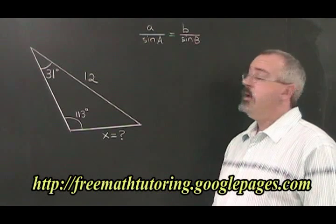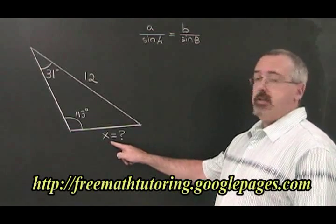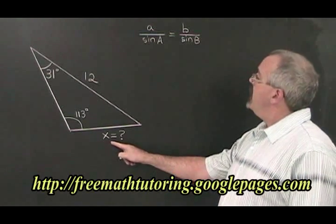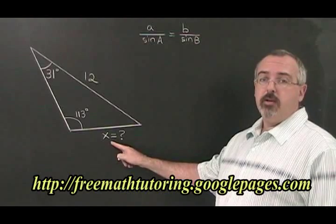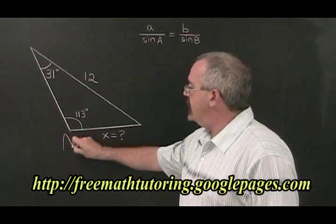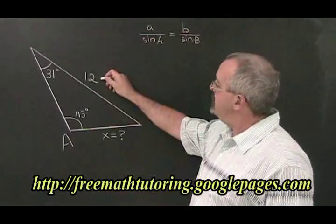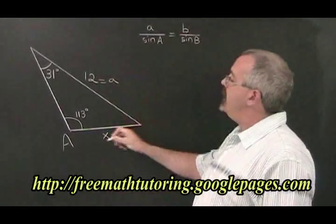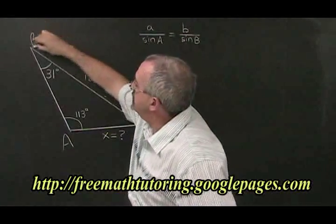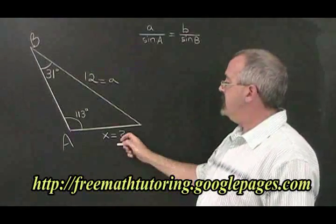In example 1, we want to know the length of this side. Applying our rules for labeling triangles, we can choose to call this angle A, which means that this must be side a. And we can call this angle B, which means this can be side b.